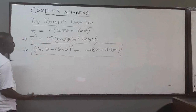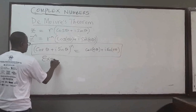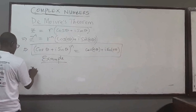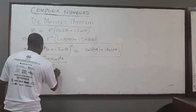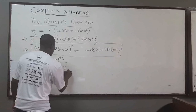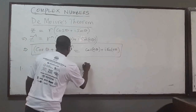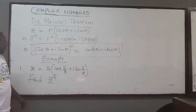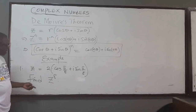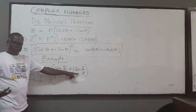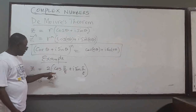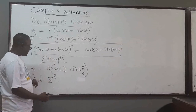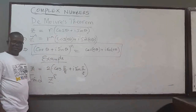So that is De Moivre's theorem. For instance, let's do some examples. Given a complex number z equal to 2 times (cos(π/8) + i·sin(π/8)), let's find z raised to the power 8. Without De Moivre's theorem, you would convert this into standard form, then raise it to the power 8 and expand using binomial expansions.